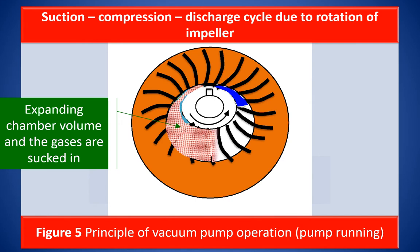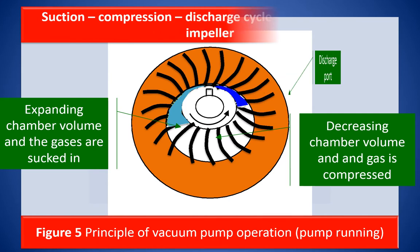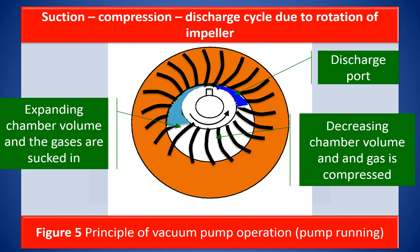The volume of the cell gradually decreases as the impeller continues to rotate. The gas is compressed and the pressure starts to increase until it reaches the pressure at the discharge port, which is close to atmospheric pressure. When the impeller reaches the discharge port, the gas from the cell is discharged. During continuous operation, the process of suction, compression, and discharge is continuously carried out, thus achieving continuity.